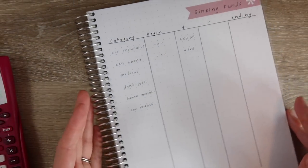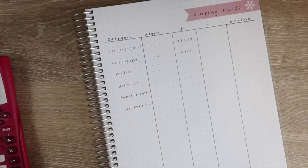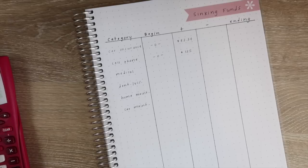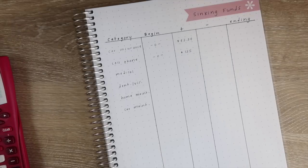Those are just a few of the different categories that you can have for sinking funds. Really you just have to make it work for you and your family. For us right now a few sinking funds are working, but in the future I would definitely like to add more.